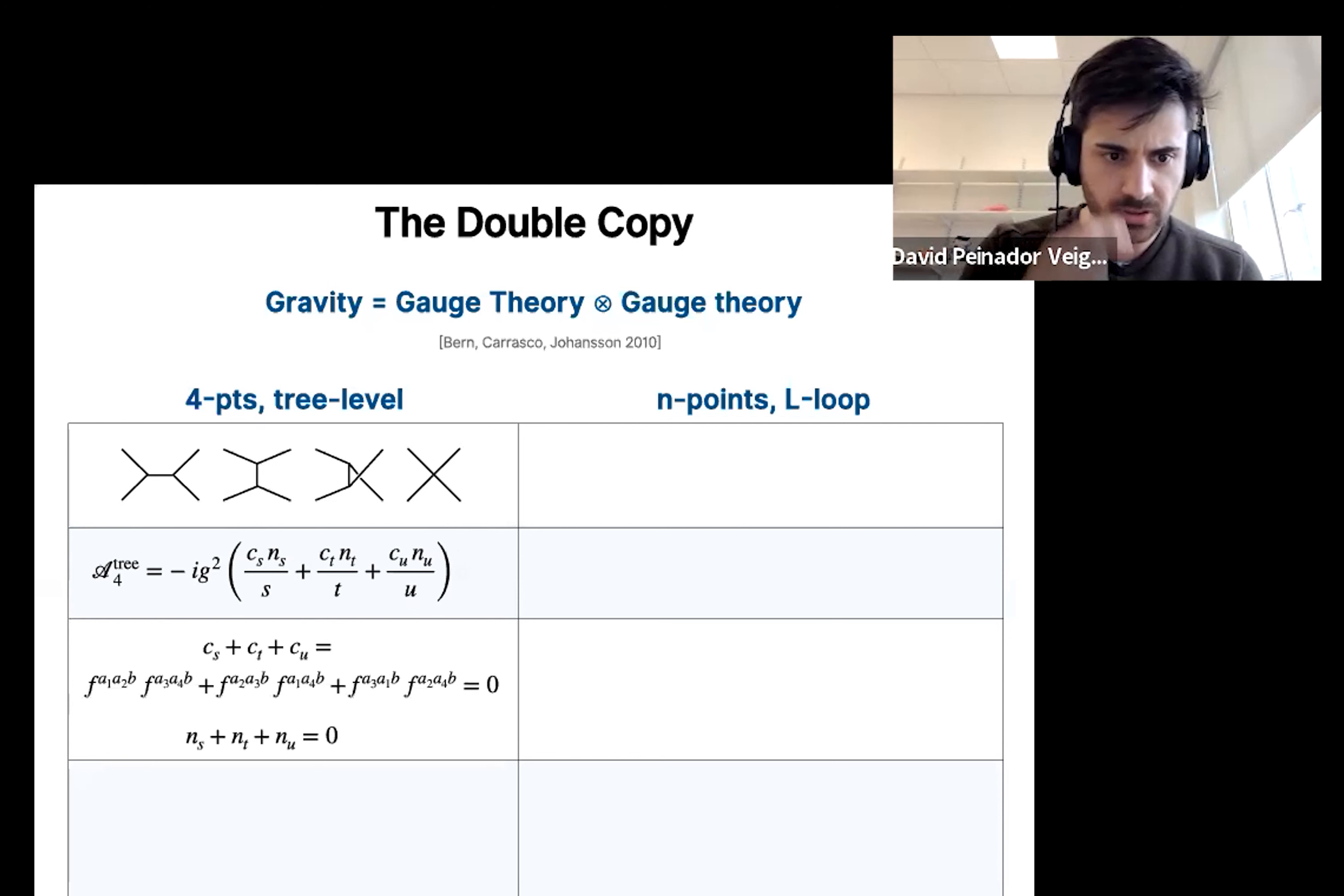Now, the C's are not independent from each other, because they are structure constants, which means that they satisfy the Jacobi identity. What is remarkable is that the kinematic factors also satisfy the same identity. And so they're basically on the same footing, which motivates us to replace the color factors by another set of numerators of kinematic factors. And if you do that, you get an object that is invariant under diffeomorphisms. And in fact, it's a tree-level amplitude of a gravitational theory.